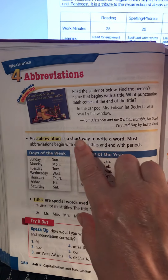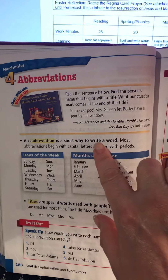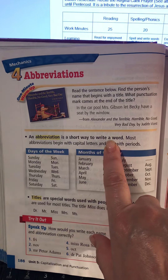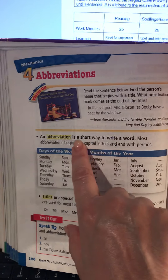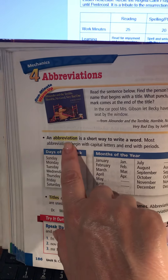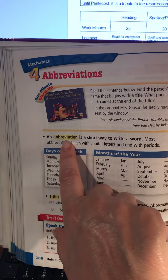Hello boys and girls, today's lesson is a review of abbreviations. As we know, an abbreviation is a short way to write a word. We've been doing that with the months of the year. When we write our headings, we sometimes abbreviate the day of the week or even titles of people's names, but we're focusing on days of the week and the months of the year.